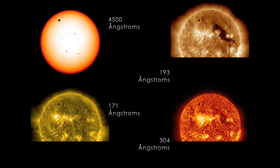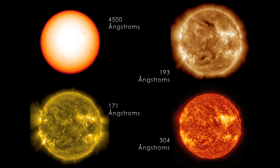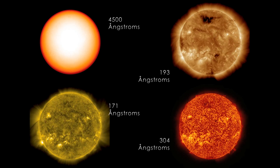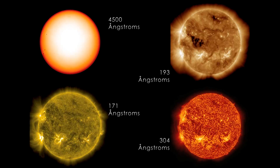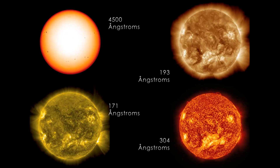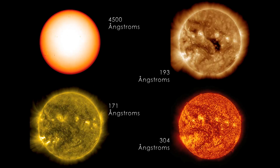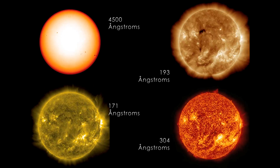Did you see that little tiny black dot that's close to the North Pole of the Sun? That's Venus. Every hundred years or so, it moves in front of the Sun, giving us this rare and amazing astronomical event.